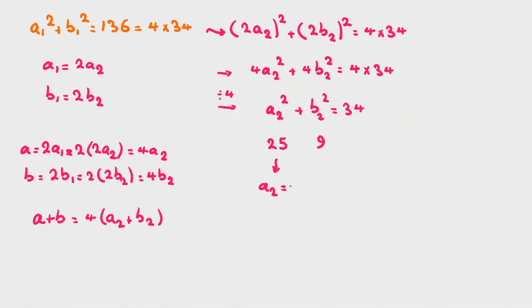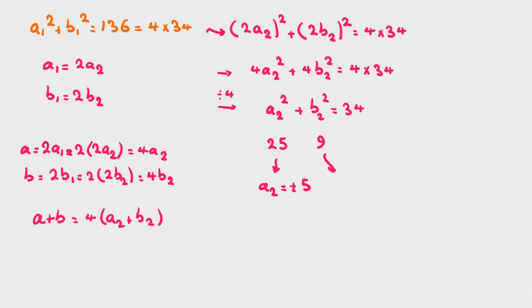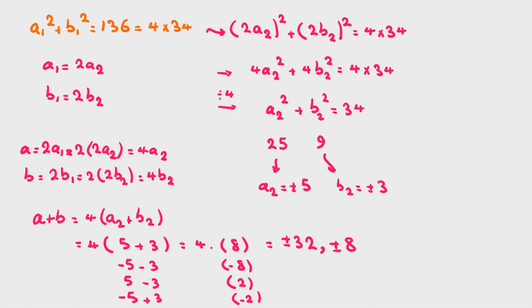So from this part, a2 can be plus minus 5. And in this problem, a and b are integers, right? Because if they are in real numbers, we have infinitely many solutions. And b2 can be plus minus 3. So let's consider different cases. It will be 4, 5 plus 3, negative 5, negative 3, 5 minus 3, minus 5 plus 3. And it will be 4 times 8, or negative 8, or 2, or negative 2. And if we write all the answers, plus minus 32 and plus minus 8. So we found 4 answers for this problem.